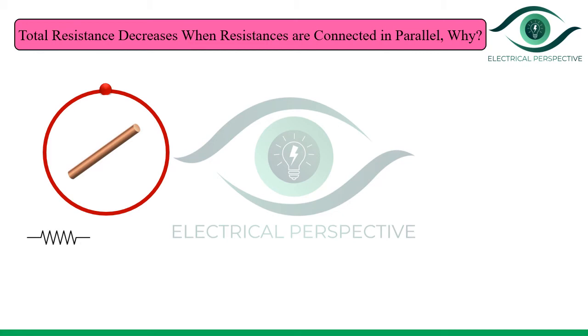Let us consider a single conductor having some resistance. We know that R equals ρL/A, which means R is inversely proportional to cross-sectional area.